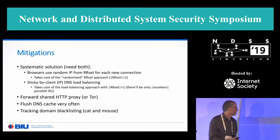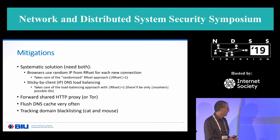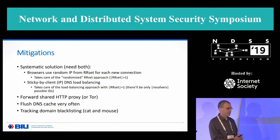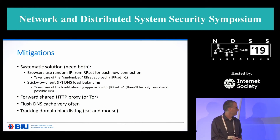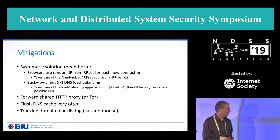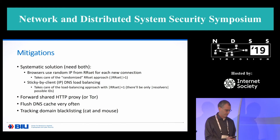Users can also opt to use a forward shared HTTP proxy or Tor — of course, this is all well for individual users, but it's not a solution for organizations or universities. Users can opt to flush the DNS cache very often, or in the extreme case disable DNS caching altogether, though this has some performance penalties. And one can track down or monitor the domains used by this technique, though it's a cat-and-mouse game, so we do not really recommend this approach.